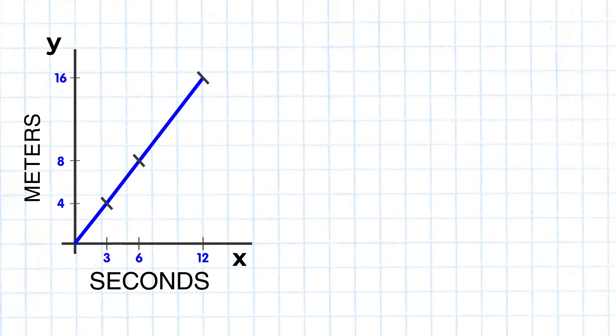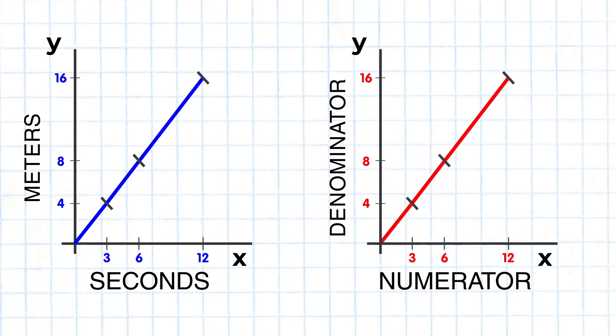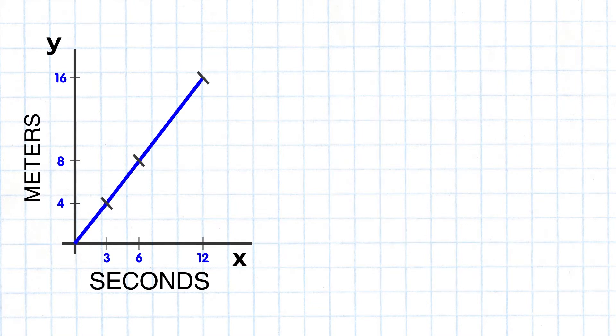So we can graph these values where the x-axis represents the number of seconds and the y-axis holds the number of meters. When plotting, we see an identical graph to the one we saw before.